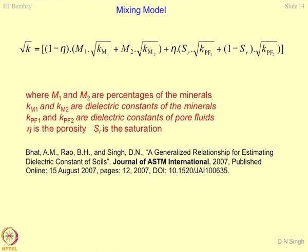Quantification of minerals present in the soil mass takes a large amount of time and is very difficult to achieve. Porosity is a macro term obtainable easily by any adopted method, and saturation can also be found out easily. The equivalent dielectric constant of a multiphase system would be: the square root of k of the first mineral and second mineral multiplied by their mass phases or percentages, then multiplied by (1 minus porosity) — giving the solid phase — while multiplying by porosity gives the liquid phase.